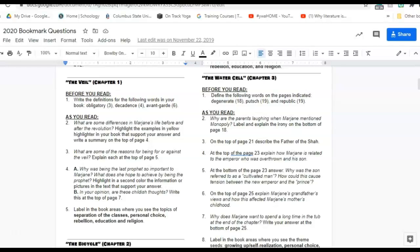Some days we might ask you for number three, explain what are some of the reasons for being for or against the veil. Explain each at the top of page five. If I come around and look at your books and you wrote it on a different page and you have nothing at the top of page five, you will not get credit.